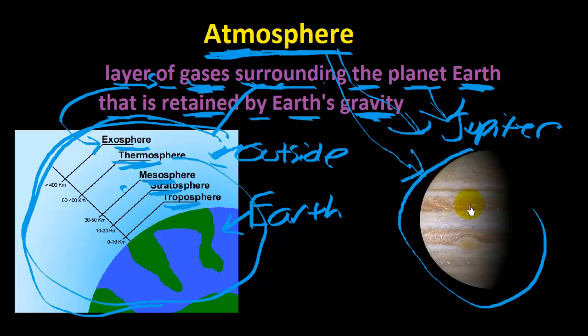So there's an atmosphere surrounding the planet as well. Jupiter, Mars, Mercury, Venus—they all have an atmosphere. Okay, so that's our science word for today, atmosphere. Thanks, bye-bye.